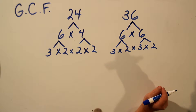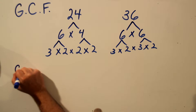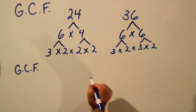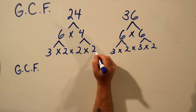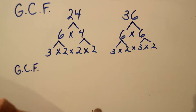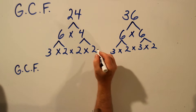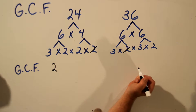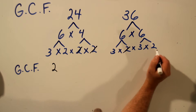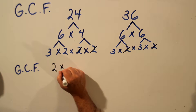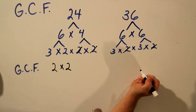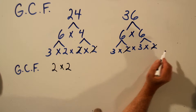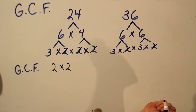Now that we've found all of the prime factors for each number, to find the greatest common factor we want to find all the numbers that are common to both lists. In this list we have a 2, and here's a 2 and another 2, so we'll use 2. And in this list we have another 2, and another 2, so we'll use another 2. We're finding the common prime factors. And in this list we have another 2, but over here no more 2s, so we don't use that 2 — just cross it off.